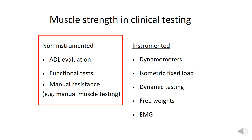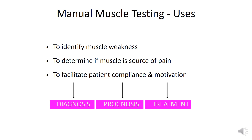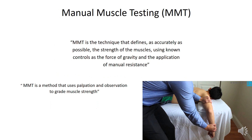Muscle strength testing can also be grouped according to whether equipment is involved. In this video, we'll be talking about an example of a non-instrumented test — manual muscle testing. In our second video, we will be talking about two examples of instrumented tests. As an example of a non-instrumented muscle strength test, manual muscle testing is used pervasively within clinical practice. It can be used to not just diagnose, but also to provide an evaluation of future improvements, as well as used as a form of treatment itself.